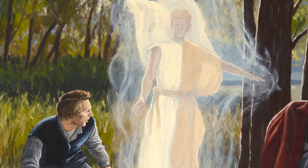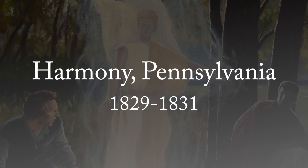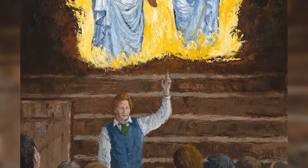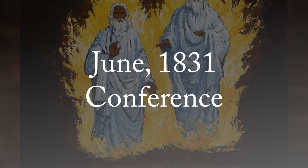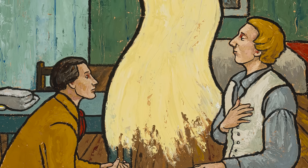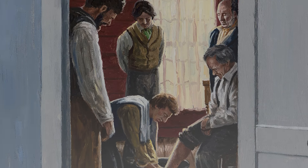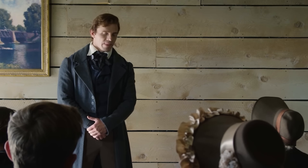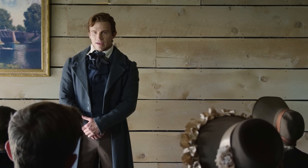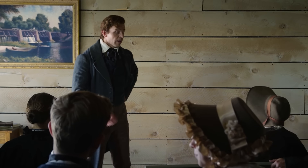Joseph Smith learned many concepts long before his exposure to Freemasonry. He learned the idea of detecting true messengers from false ones as early as when he was in Harmony, Pennsylvania between 1829 and 1831. He learned about becoming great high priests to God as early as June 1831. He learned that people could part the veil and come into God's presence. He learned about people becoming priests and kings to God as early as 1832. He began doing ceremonial washings and anointings as early as January 1833 with the School of the Prophets and in the Kirtland Temple.